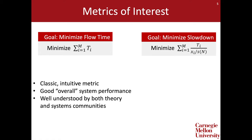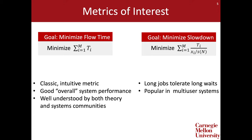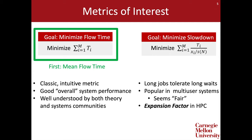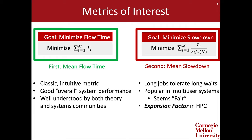Alternatively, people have considered minimizing total slowdown. Here, each job's response time is divided by the job's completion time if it were given exclusive access to all n servers. Under this metric, longer jobs are capable of tolerating longer waiting times. This metric is particularly popular in multi-user systems, where multiple users share the same underlying hardware — a job's slowdown can be thought of as how much it was interfered with by other users, so policies which minimize slowdown can be thought of as fair. We'll discuss both metrics today, but I'll stick to minimizing mean flow time for most of the talk, then discuss how our results generalize to minimizing mean slowdown.